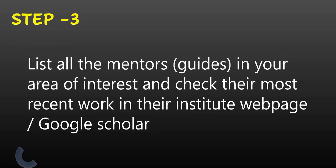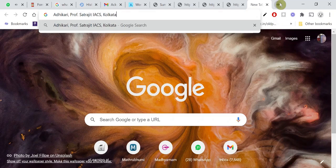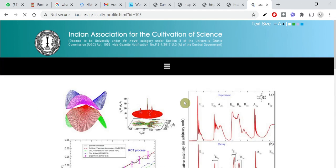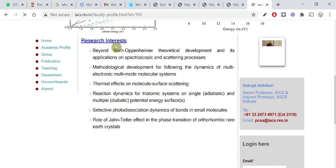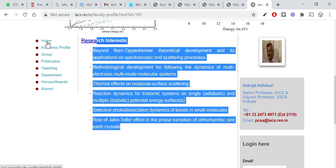So, let's go back to the presentation. Once you choose your guide, you have to check their most recent work in their institute webpage. For example, if I want to search for more details about Professor Satrajit Adhigari, then I can simply copy this and paste it here in the address bar. That will give you the details about Professor Satrajit Adhigari. If you go inside, you can see that his areas of research interest is given in somewhat more detail. You can find publications, teaching departments and all other details here. Similarly, you have to find out the details of other guides that you are interested to work with.